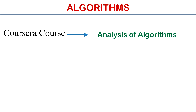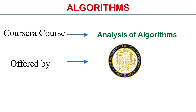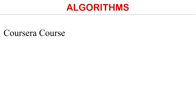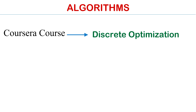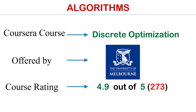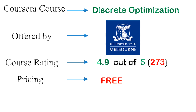Course number nine is Analysis of Algorithms, offered by the University of California, rated 4.8 out of 5 — also free. Course number ten is Discrete Optimization, offered by the University of Melbourne, rated 4.9 out of 5 and also free. You can check it out in the description box.